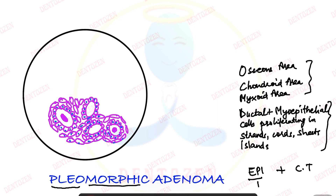That completes the first component — the epithelial component of this tumour. The second component is the connective tissue component. This can be a chondroid area, which looks like cartilage — it will be blue in color and will contain chondrocytes. Apart from that, we can also see an osseous area, a bone-like area, which will be pink in color.